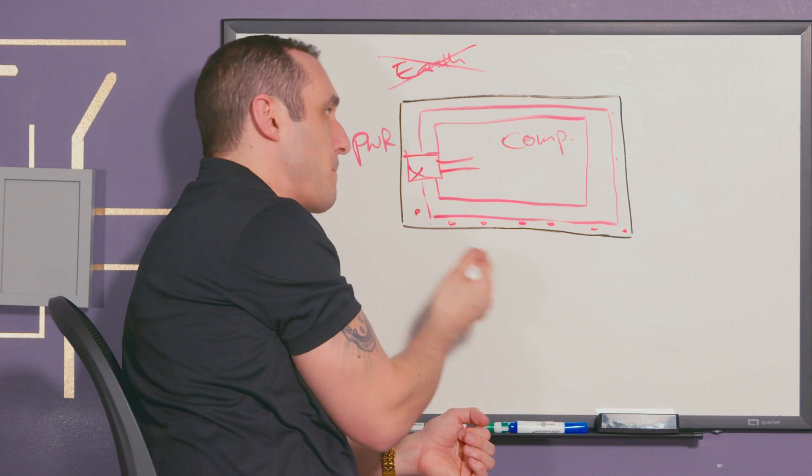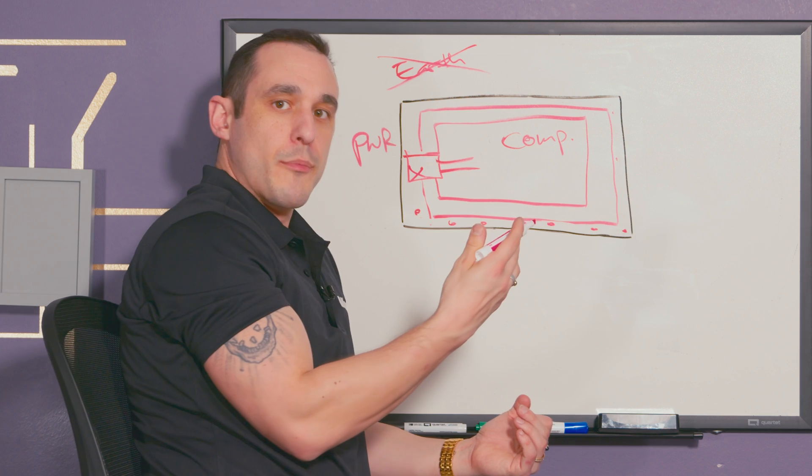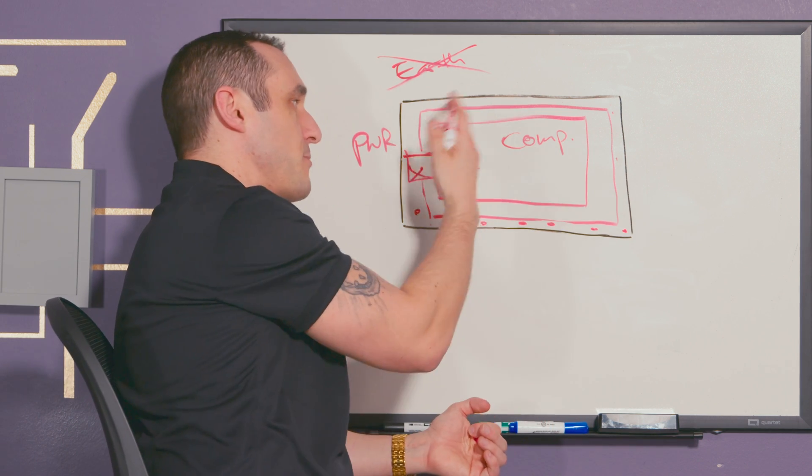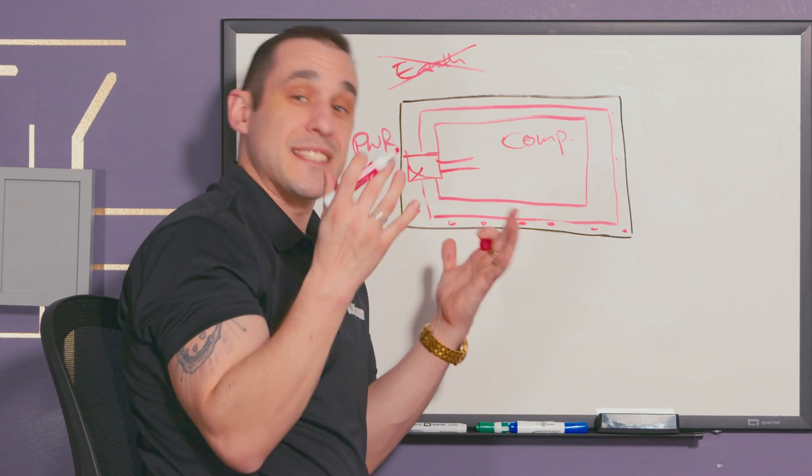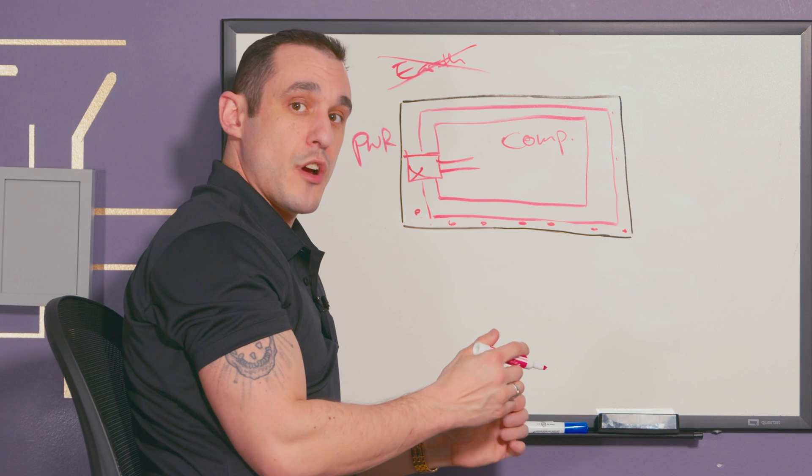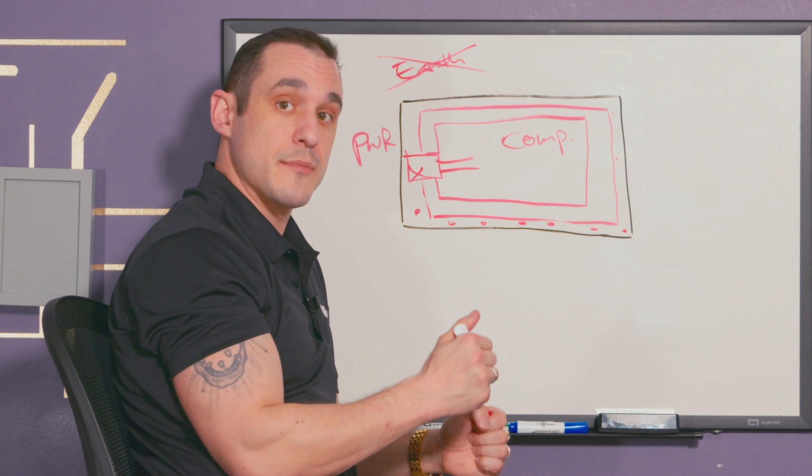That ensures that we don't have any big pieces of floating copper in the board and if we don't have any of these big pieces of floating copper we don't have a big antenna that could potentially radiate strongly and again impact our EMC testing.